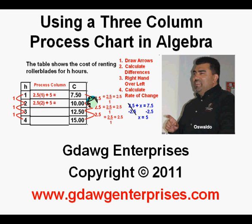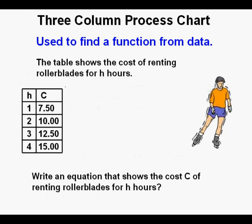Using a 3-Column Process Chart in Algebra. During this presentation you will be introduced to a method of analyzing data using an innovative technique, the 3-Column Process Chart. The objective of using a 3-Column Process Chart is to use data to determine an equation, algebraic rule, or function that is consistent with that data.